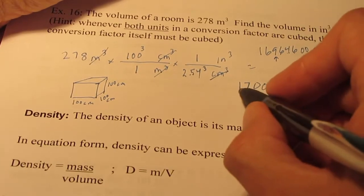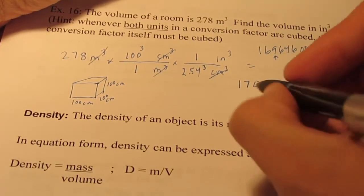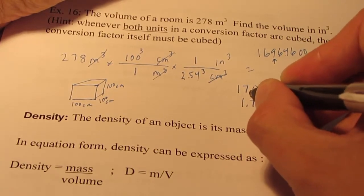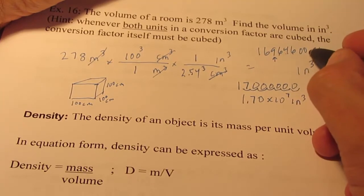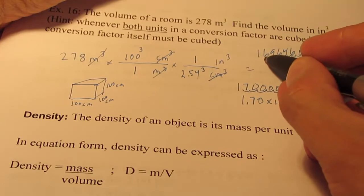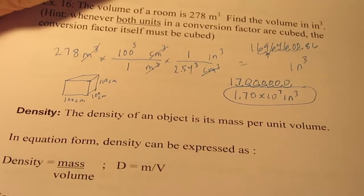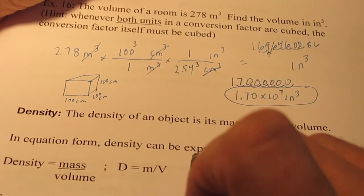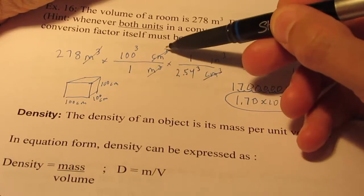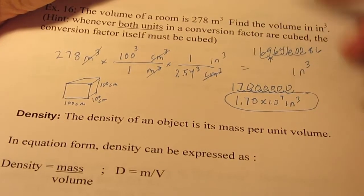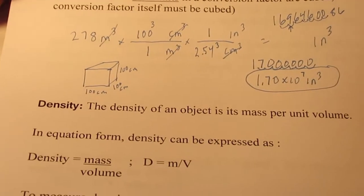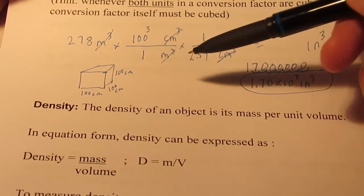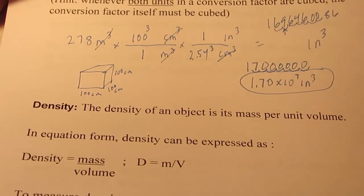How do we write that with 3 significant figures? It's 1.70 times 10 to the 7th cubic inches. So 17 million cubic inches are in a room that's 278 cubic meters. Also if both units are squared, you're going to square your conversion factor. Those are unusual, you run into those once in a blue moon.